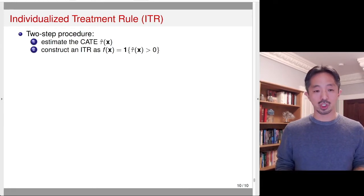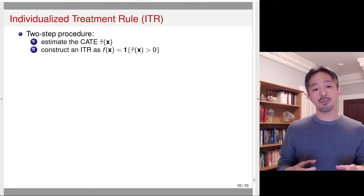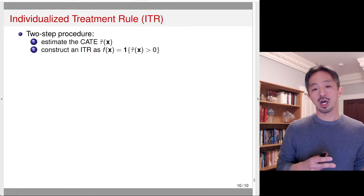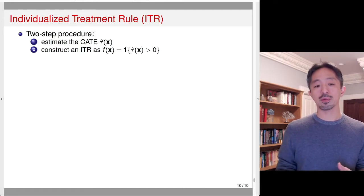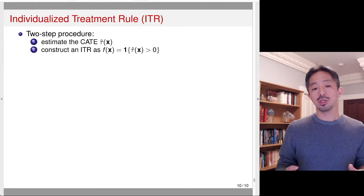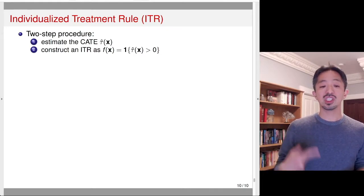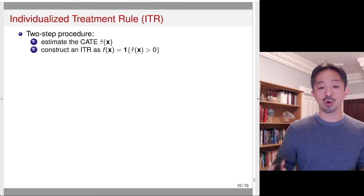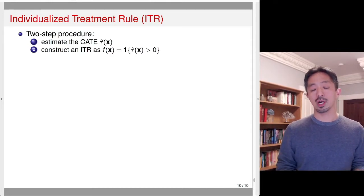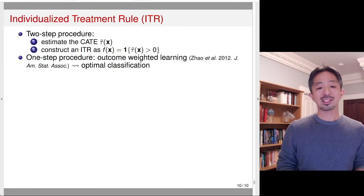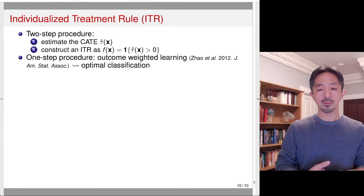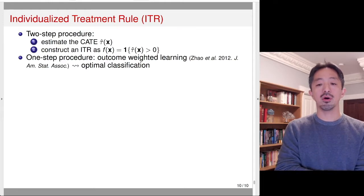The problem with this two-step procedure is that the first step — estimating the conditional average treatment effect — is not directly tied to constructing an optimal ITR, so the resulting ITR may not be optimal. Ideally, we want to estimate the CATE in a way that enables construction of the optimal individualized treatment rule. That is the approach called outcome-weighted learning, proposed by Zhao et al. in 2012.